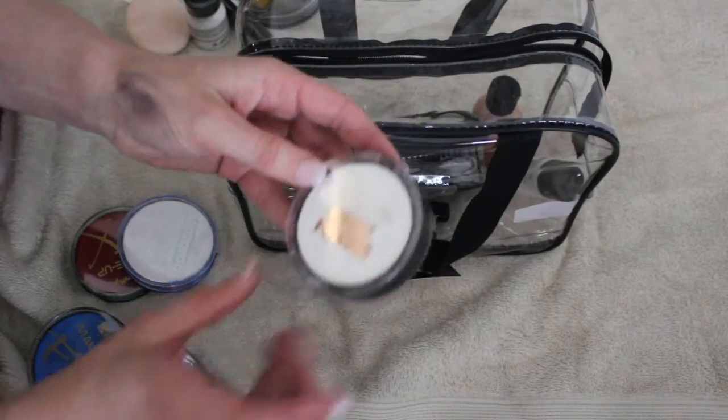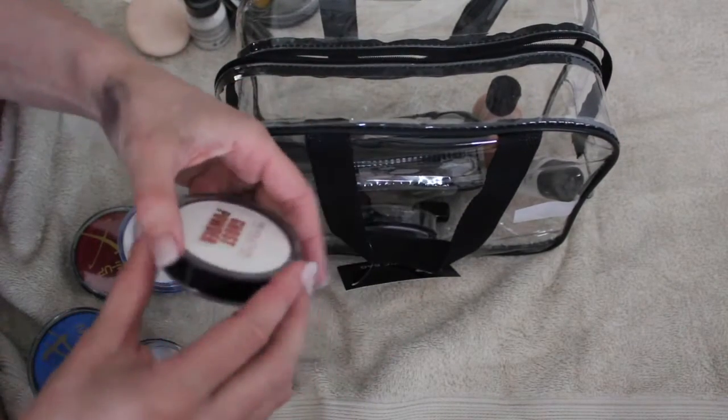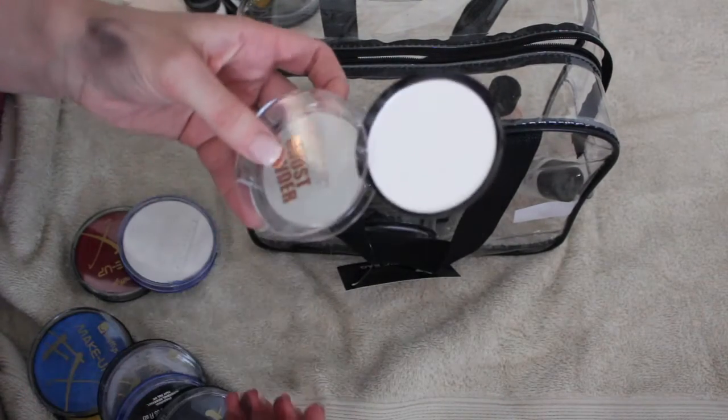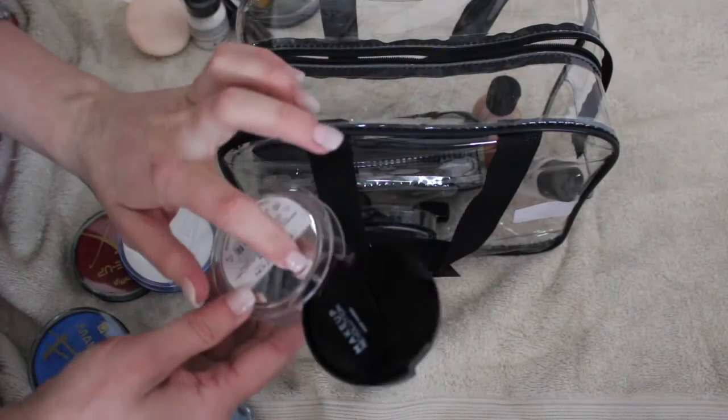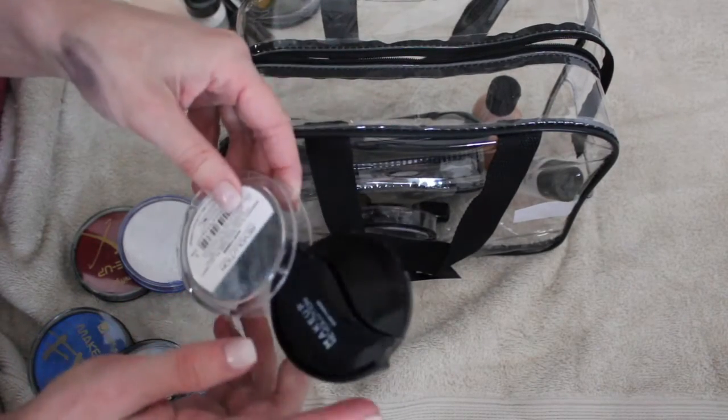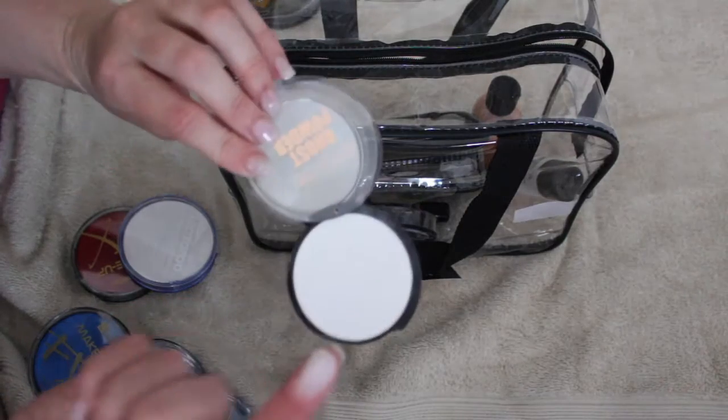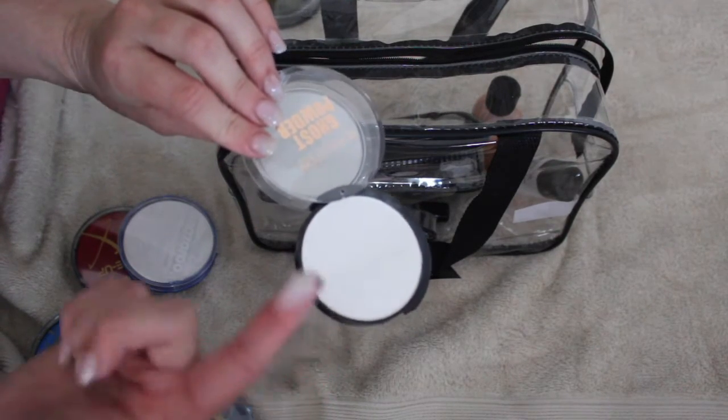Then I have the Makeup Revolution ghost powder. Again, a really good product. I like the packaging, it sort of slides out like that and it's got a mirror on the back. It did have a sponge but I've lost it. That is a really nice white powder. It's quite good for setting white cream makeup down.